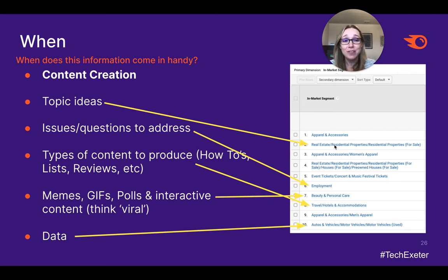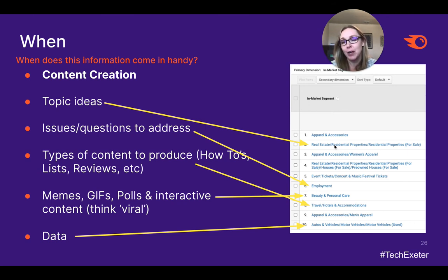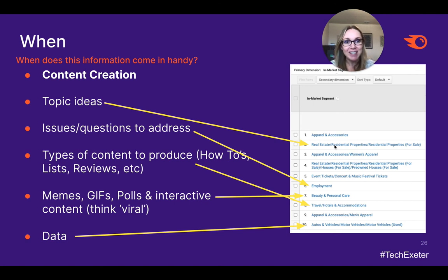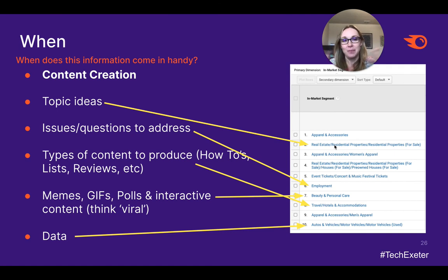The data is also going to lead you to develop fun content like memes, GIFs, polls, and things that are interactive — think viral. In beauty and personal care, for example, you can have a lot of fun with polls, brands, funny GIFs and memes about hair care and beauty fails. And people love to consume data — they love statistical insights. So if your audience is into the automotive industry, maybe create some interesting content around what to expect for new vehicles in 2022.